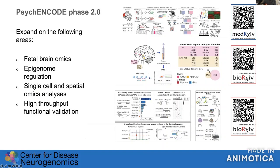We are now preparing the second phase of the PsycEncode manuscripts, expanding previous efforts in critical areas including population-scale analysis with transcriptomics in the human fetal brain, adult brain targeting both transcriptome and epigenome, novel assays for single-cell and spatial omics, and innovative methods for high-throughput functional validation. Preprints are available on MedArchive and BioArchive.